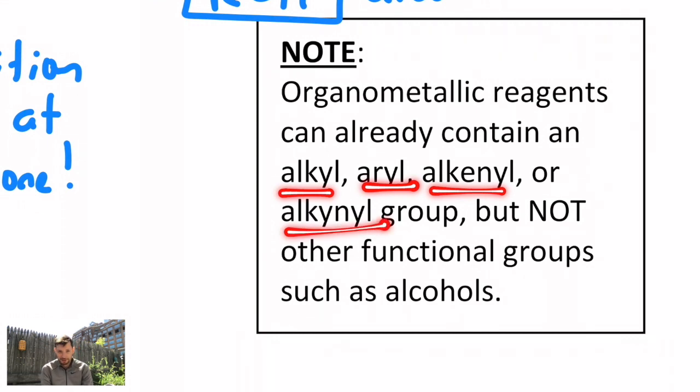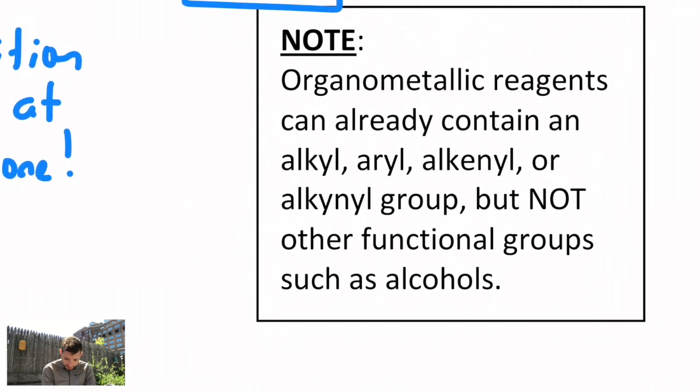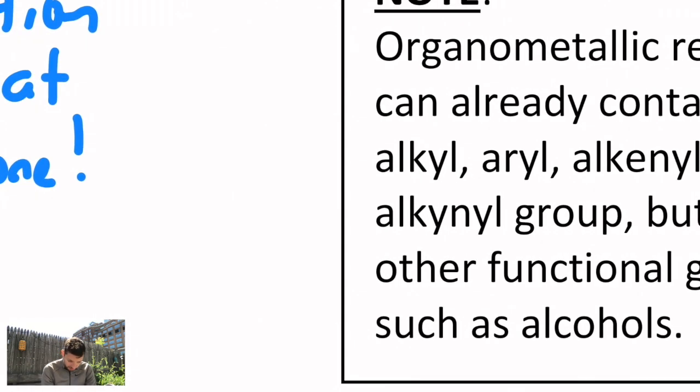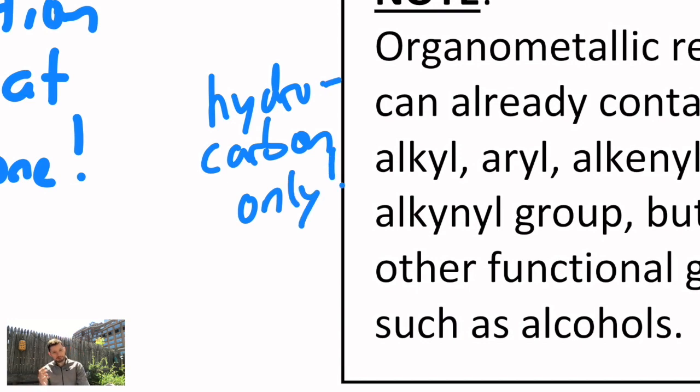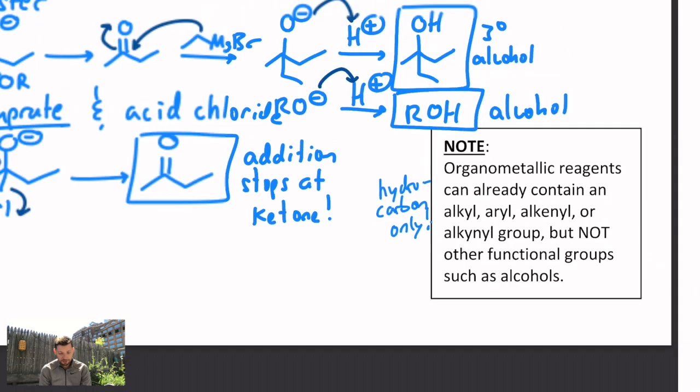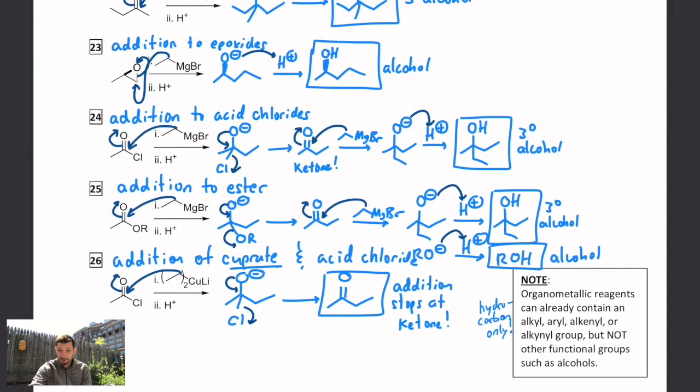You can't make a Grignard out of something that already has an alcohol or a ketone or something else already in that molecule. And that's because Grignards, lithiates and cuprates are normally so reactive, they would react with the molecule itself instead of just forming the reagent. Hydrocarbon only. It's got to have a halide in it to do that substitution, but that's what you can carry. Okay, that's a quick introduction to organometallics. We're going to use them for the bulk of the year.